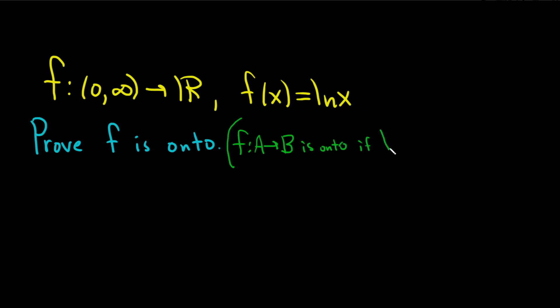For all little b in capital B, so for all elements in the co-domain, no matter which one we pick, we can find some element in the domain. So there exists a little a in capital A such that f takes that element in the domain and sends it to the element in the co-domain. So every element in the co-domain is covered or gets mapped to by some element in the domain.